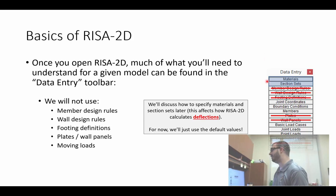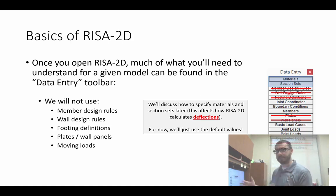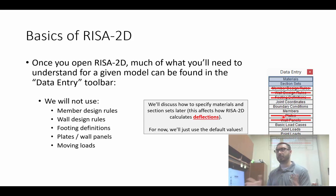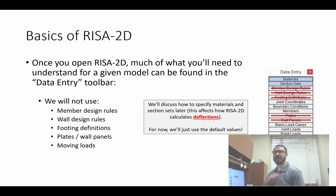In this course there are a couple of buttons we're not going to use. We're not going to use member design rules because we're not in a design class. Same thing with wall design rules. We're not going to be defining footings — we'll just use the typical boundary conditions we normally use in structural analysis. We're also not going to be defining plates or wall panels, and we're not going to be dealing with moving loads right now. All we're going to use are the joint coordinates, boundary conditions, members, basic load cases, load definitions, and load combos.